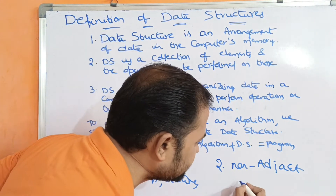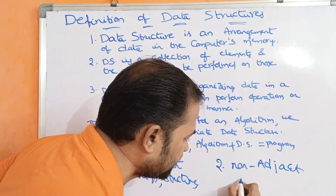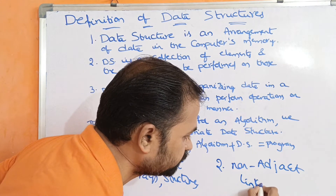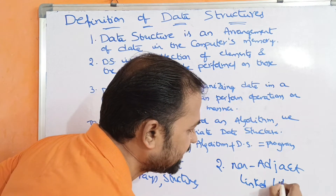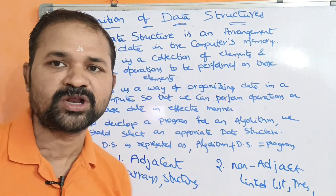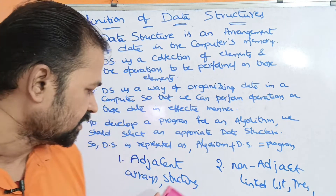The best examples of non-adjacent memory locations are linked list, trees, and graphs.